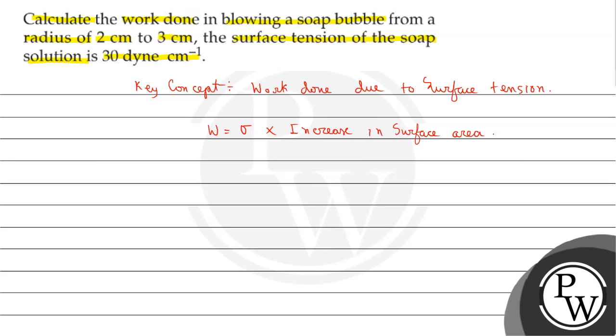We can use the formula to solve this question. Here, radius r1 equals 2 cm, radius r2 equals 3 cm, and the value of surface tension is 30 dyne per centimeter.